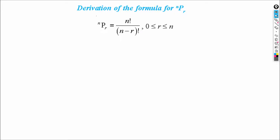Dear students, let us understand one of the important derivations — the derivation of the formula for NPR, that is the number of permutations of n objects taken r at a time. We have to prove that NPR is equal to n factorial upon n minus r factorial, where r lies between 0 and n.